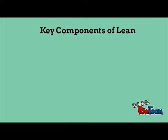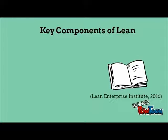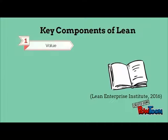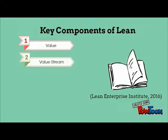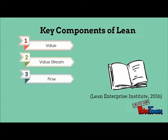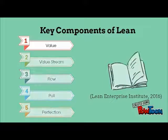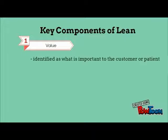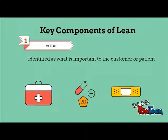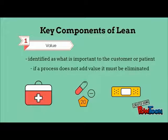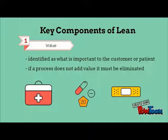The key components of Lean. There are five principles within the Lean process. These principles are value, value stream, flow, pull, and perfection. Value is identified as what is important to the customer or patient, and as previously stated, if a process does not add value, it must be eliminated.